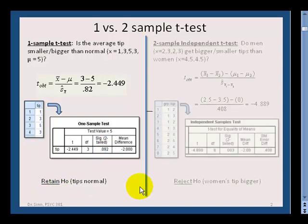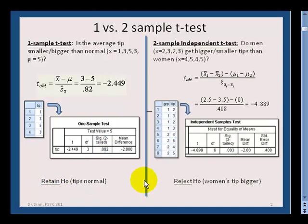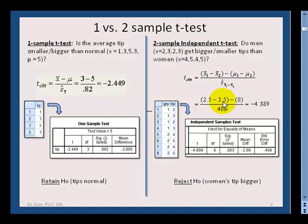Now we add the two-sample independent t-test. You might be surprised to learn there are now two samples. Men get tips of two, three, two, and three; women get four, five, four, and five. The means work out to 2.5 and 3.5, and we subtract from that the expected difference between the two populations, which we always set to zero.